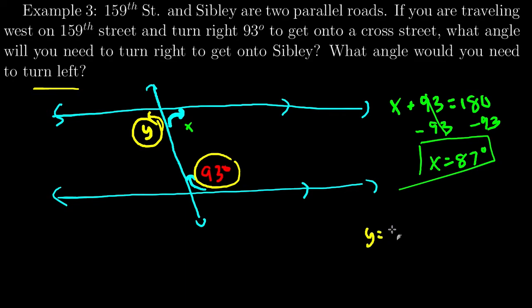So, y is equal to 93 degrees. If you didn't go that route, but instead notice that x and y are a linear pair, they make a straight angle. Notice 87 and 93 add up to 180. So, that will work as well.